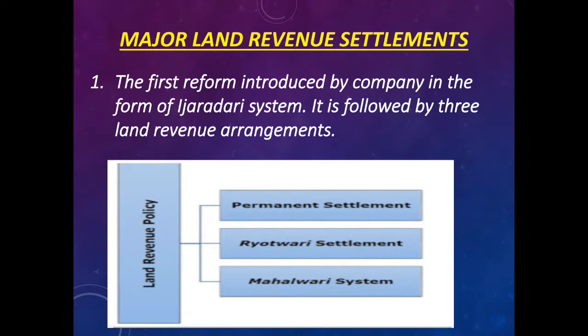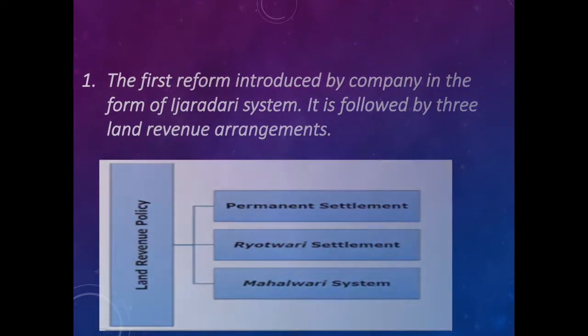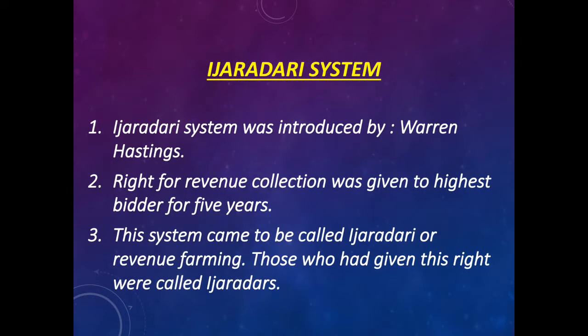The Ijardari system was introduced by Warren Hastings. The right for revenue collection was given to the highest bidder for five years. This system came to be called Ijardari or Revenue Farming. Those who had been given this right were called Ijardars.